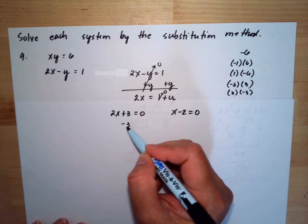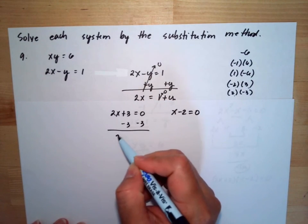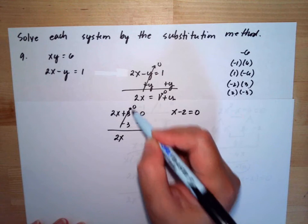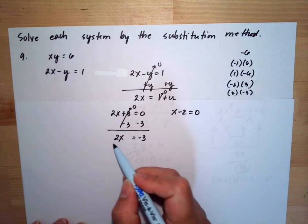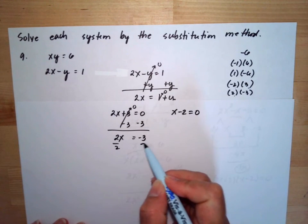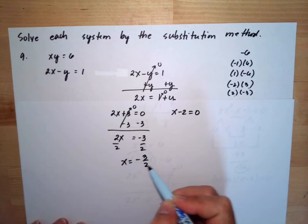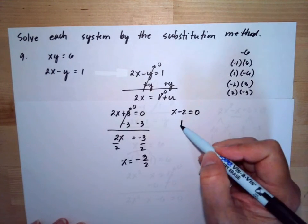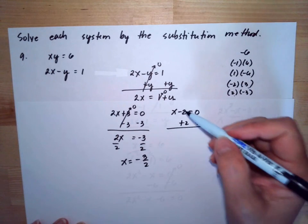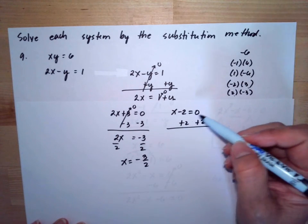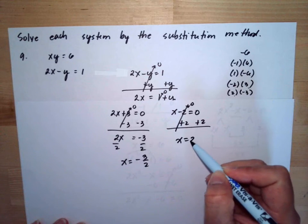Subtracting 3 from both sides of the first equation gives 2x is equal to negative 3, then dividing both sides by 2 gives x is equal to negative 3 halves. For the second equation, adding 2 to both sides gives x is equal to 2. So we have two x solutions.